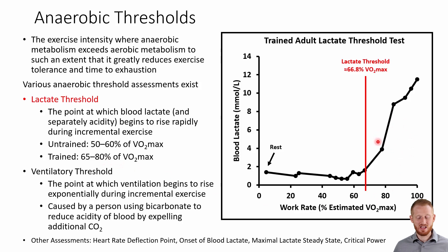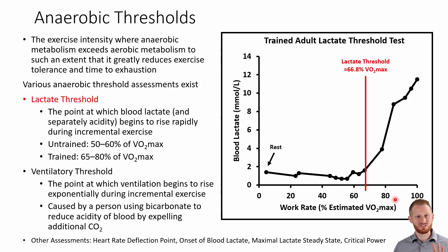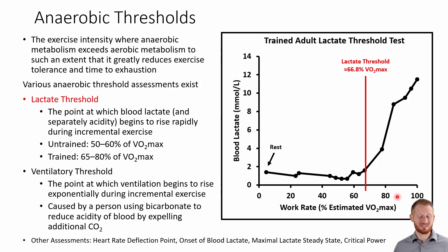Trained individuals can exercise at a higher intensity without that large lactate spike, which is accompanied by a simultaneous large increase in blood and muscle acidity. That acidity decreases exercise performance and forces you to slow down. So you don't want to cross your anaerobic threshold during an endurance event until the very end — the final kick — because once you do, your ability to maintain that intensity is very limited.